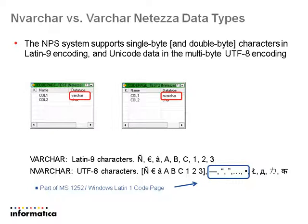In a varchar field, you'll have Latin 9 characters such as all the characters you'd see in a European writing system, and then all the ASCII 7 characters like A, B, C, 1, 2, 3.